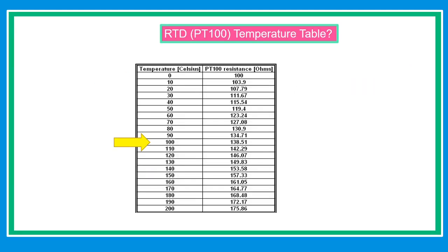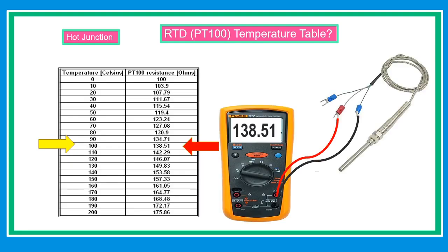An RTD resistance can be converted into temperature that gives values of temperatures for any given resistance. The table below shows temperature versus resistance in degrees Celsius. If we are going to look at the yellow arrow 100 degrees Celsius and the reading of our multimeter, if we are going to calibrate, it should be 138.51 ohms.